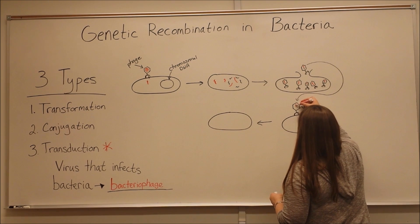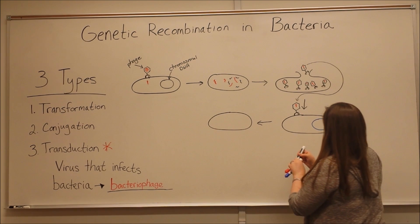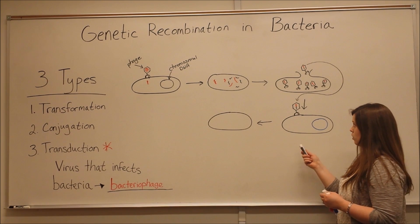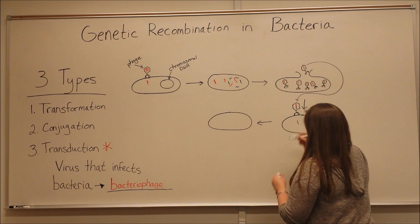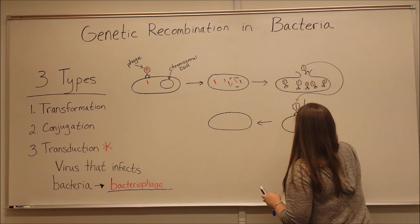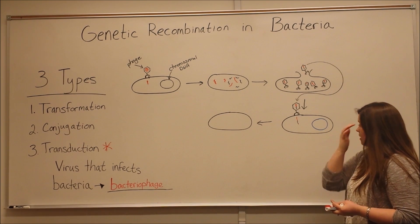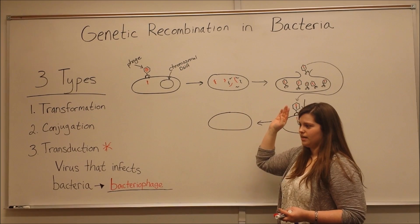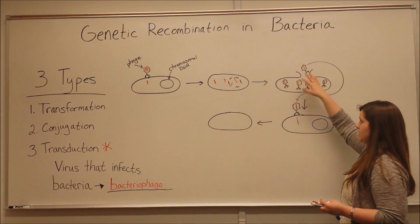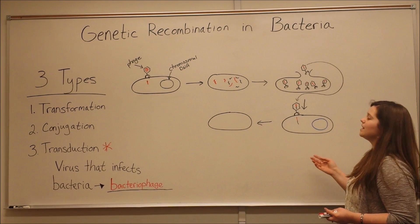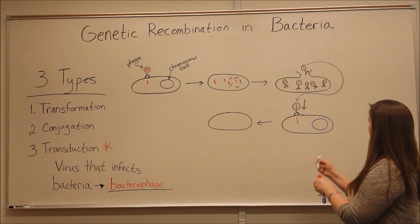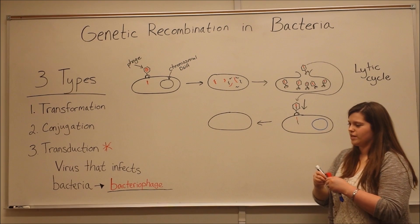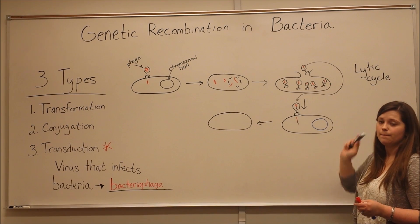So here we have this phage, which is carrying phage DNA but also DNA from the previous bacteria's chromosomes. This gets injected at the beginning of the infection process. At this point, either the same cycle can continue — where the bacteria cell's chromosome gets broken down, the phage DNA gets replicated, phage proteins are made, assembly occurs, and then cell lysis — that's called the lytic cycle. You can remember this because lytic is like lysis, and that results in cell lysis.